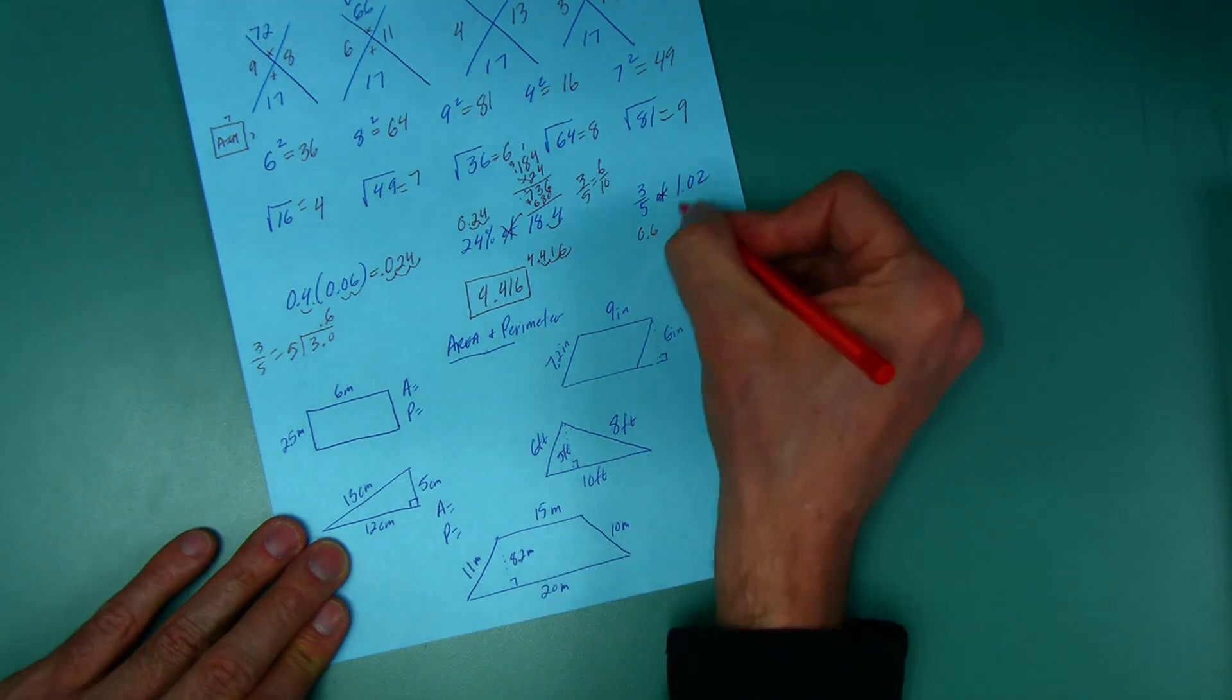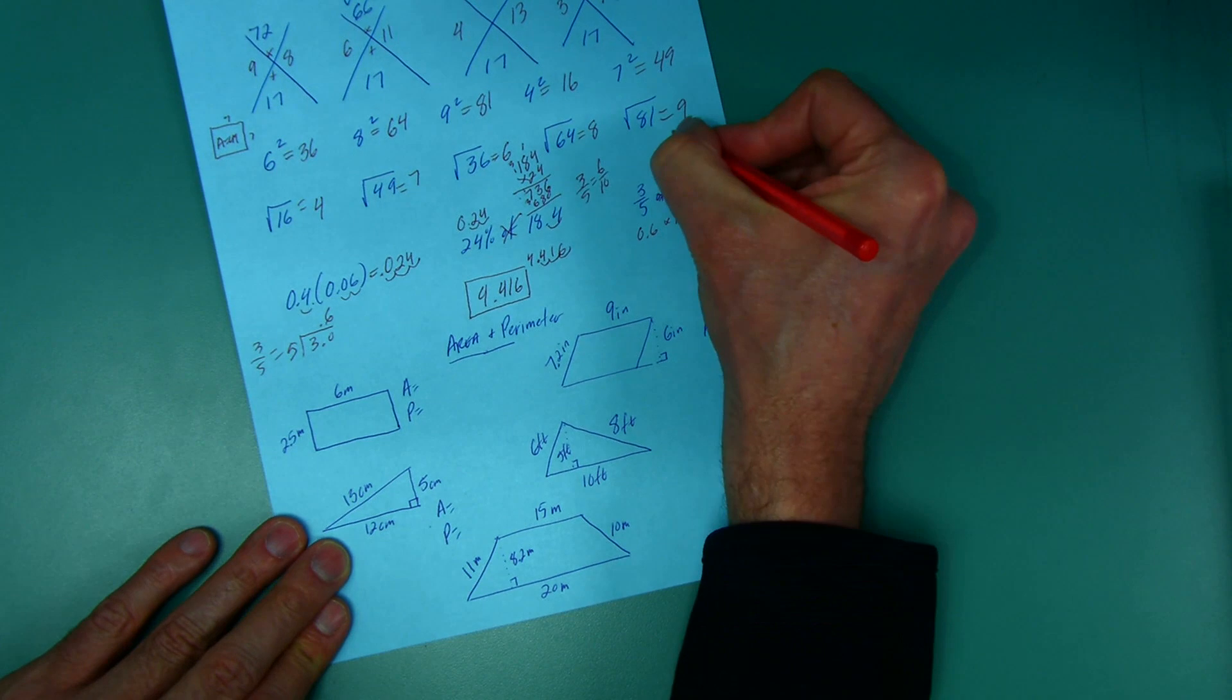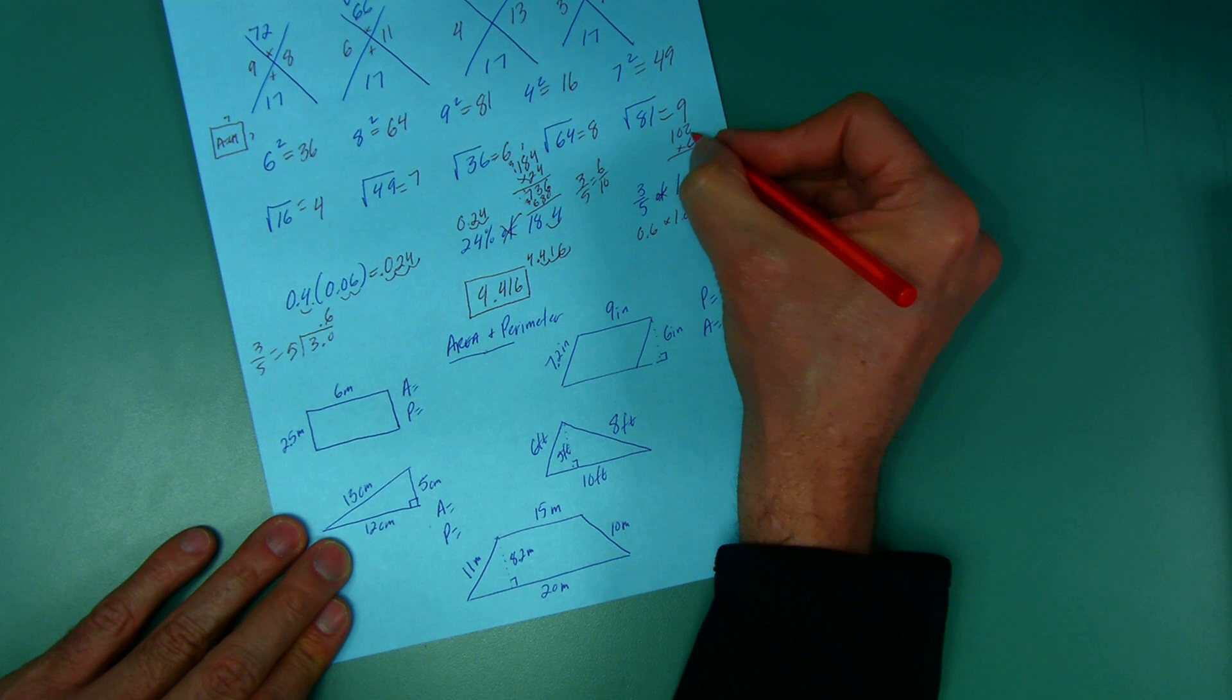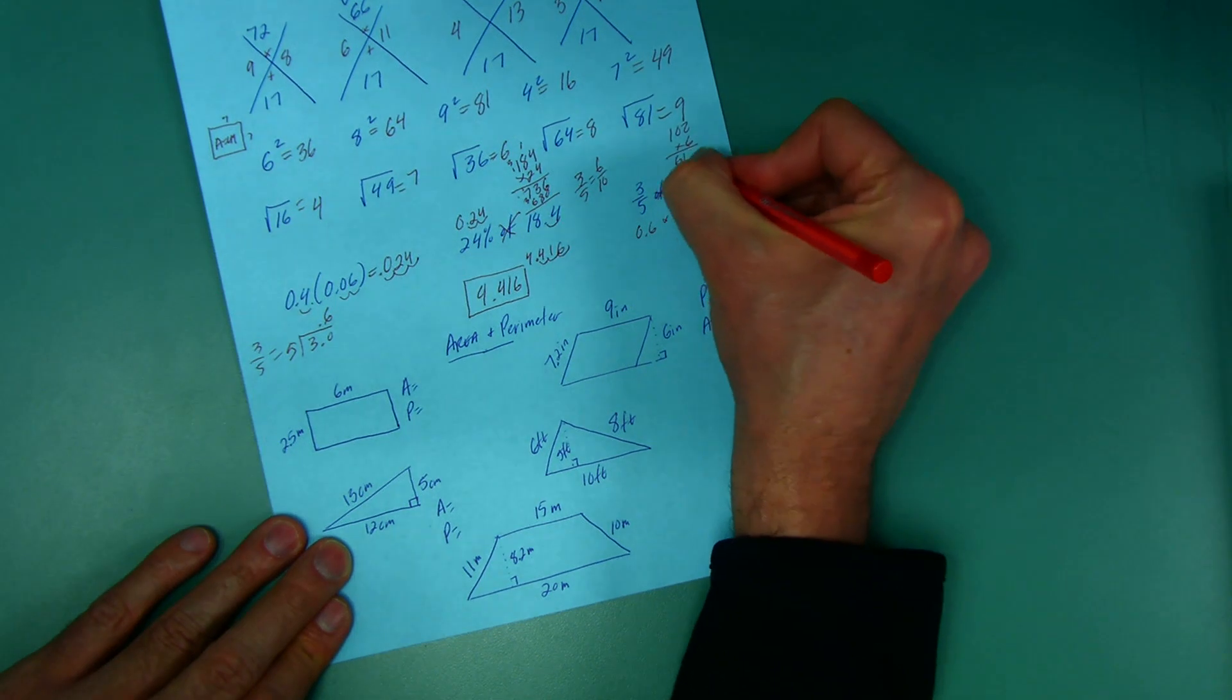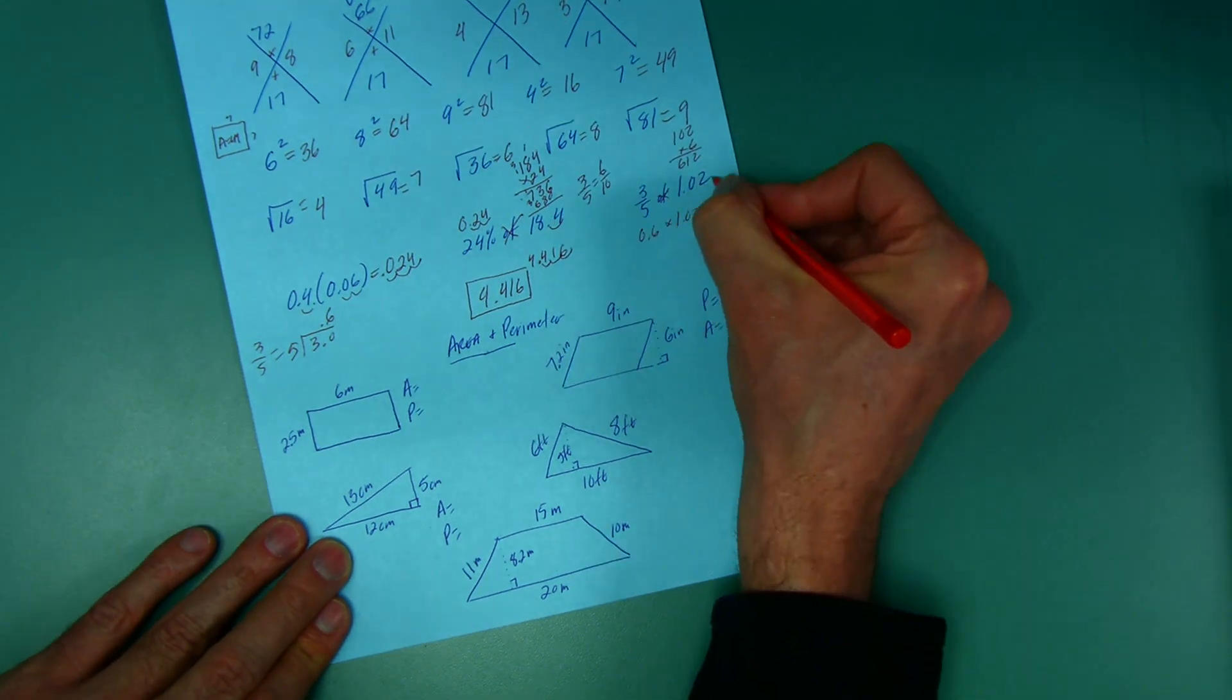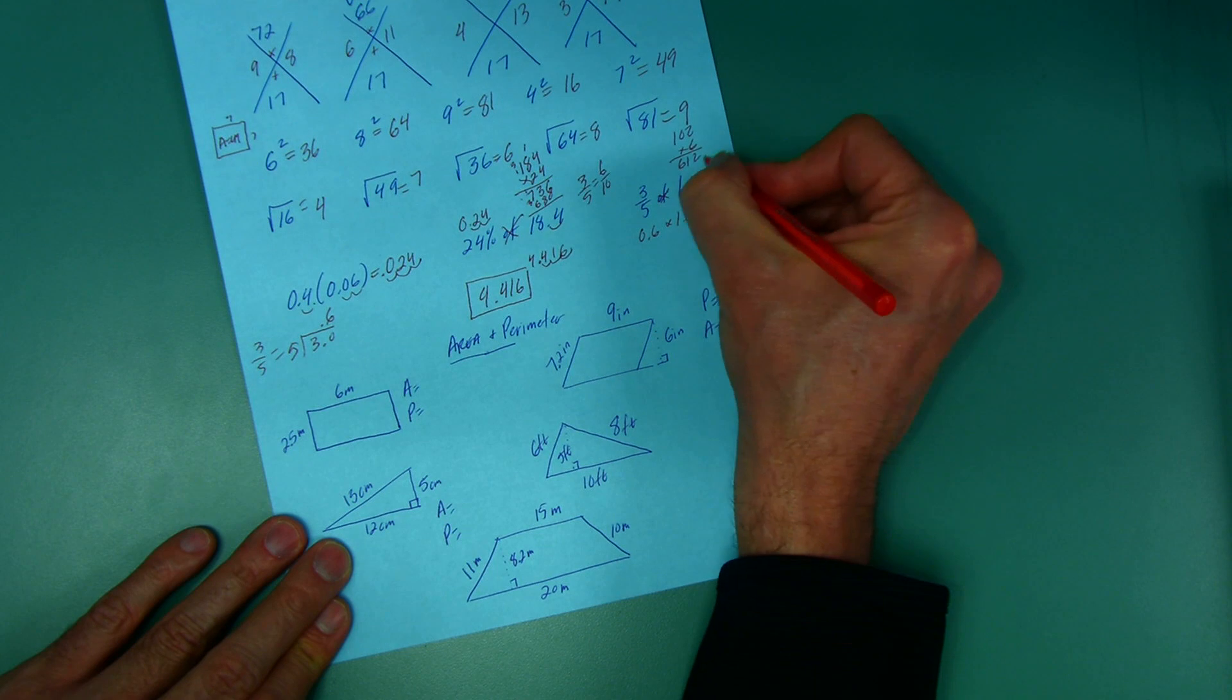So I'm going to go 0.6 times 1.02. 6 times 102 - that's 6 hundred and 6 twos - that is 612. But I got to move it over 1, 2, 3 spots: 0.612, six hundred twelve thousandths. Get it?